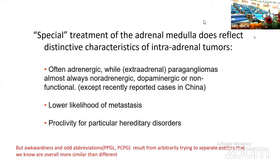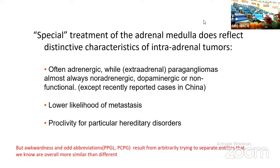Intra-adrenal tumors are often adrenergic — that is, they produce adrenaline or epinephrine — while extra-adrenal paragangliomas are almost always noradrenergic, dopaminergic, or nonfunctional, with the exception of a recently reported group of adrenergic pheochromocytomas in China. They also have a lower likelihood of metastasis and a proclivity to occur in association with particular hereditary disorders. But quite a bit of awkwardness and odd abbreviations result from arbitrarily trying to separate entities that we know are overall more similar than they are different.